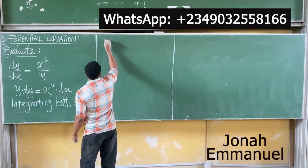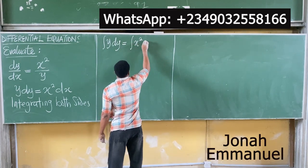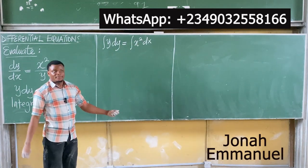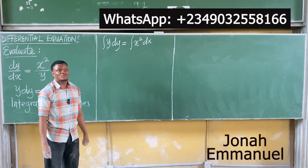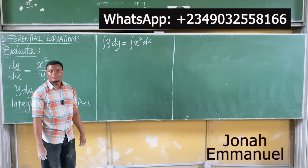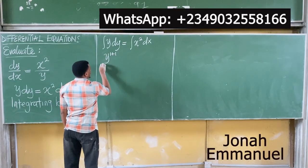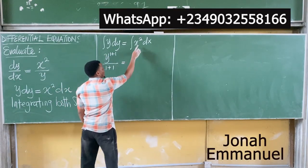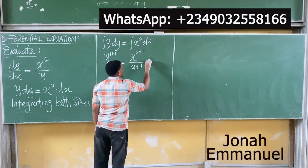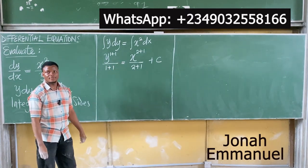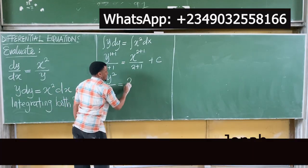Integrating both sides: the integral of y dy is equal to the integral of x squared dx. Using the general method — add one to the power and divide — y to the power of one plus one over one plus one equals x to the power of two plus one over two plus one plus c. This becomes y squared over two equals x cubed over three plus c.